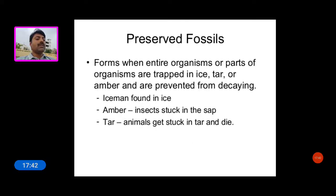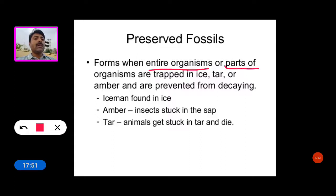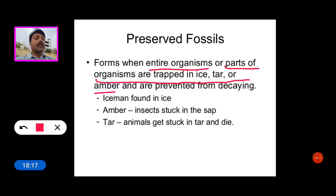Now see the preserved fossils. Preserved fossils form when entire organisms or parts of organisms are trapped in ice, tar, or amber. Amber is a liquid component of some gymnosperms — a resiniferous compound extracted from gymnosperm plant stems or leaves — and it preserves organisms from decay.